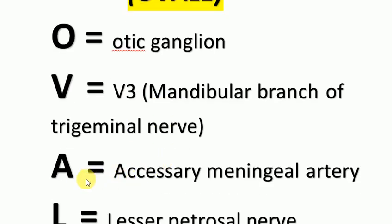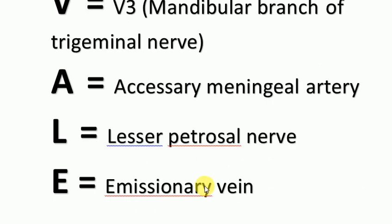A for Accessory Meningeal Artery. L for Lesser Petrosal Nerve. E for Emissary Vein.